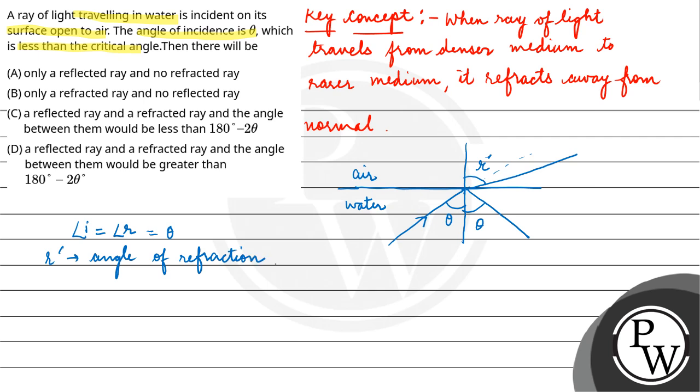The angle of incidence theta is less than critical angle. So that means total internal reflection will not happen. So some part is reflected and other one is refracted. Since the refracted ray bends away from normal, that means the angle of refraction is greater than angle of incidence. r dash is greater than theta.